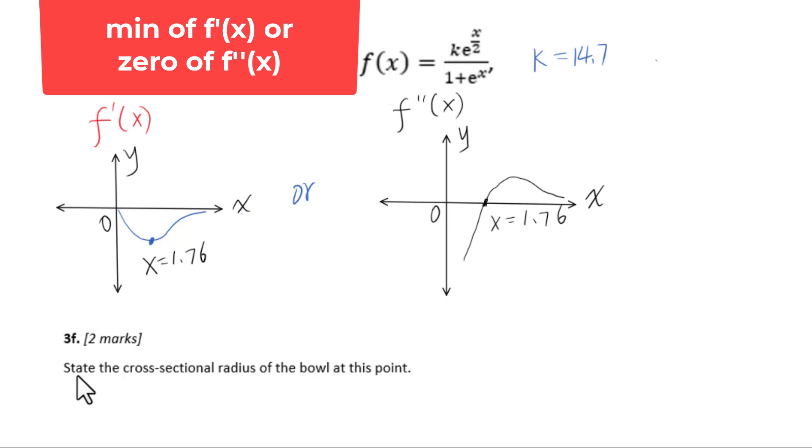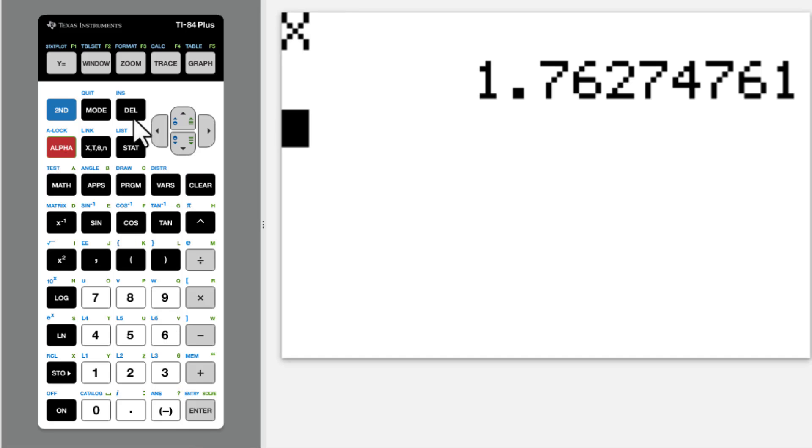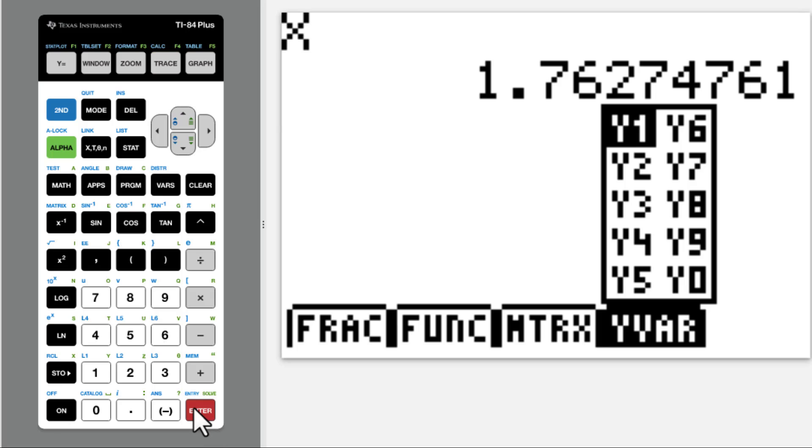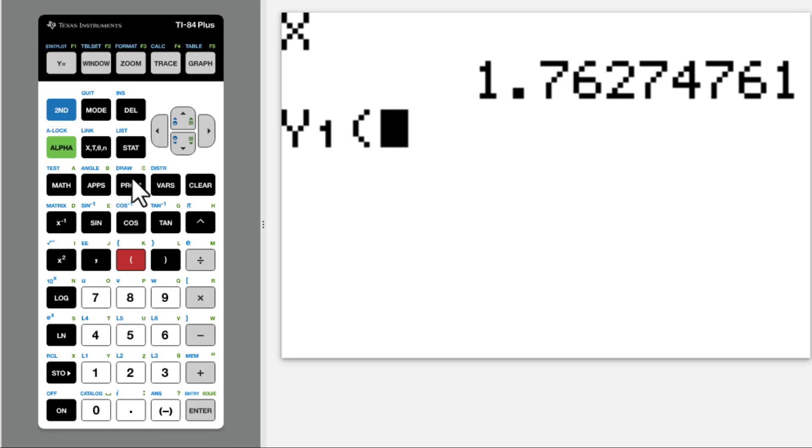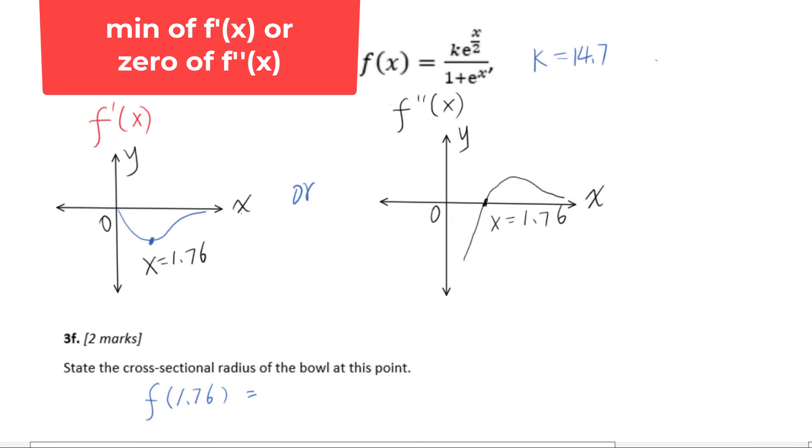Problem 3f. State the cross-sectional radius of the bowl at this point. Basically, we are looking for f of 1.76 equals. Then press x, enter. Alpha trace, y1 is the function. Then drop this down. Enter. Answer is 5.20 cm. So the radius is 5.20 cm.